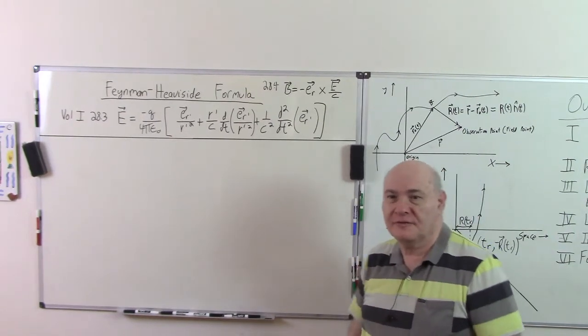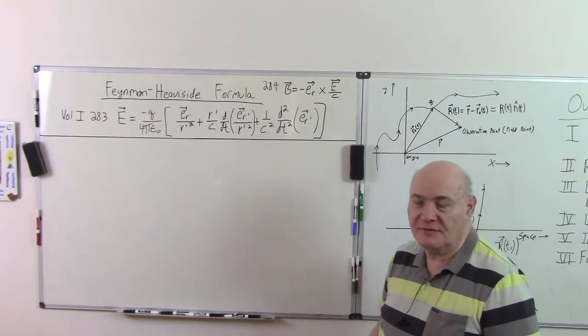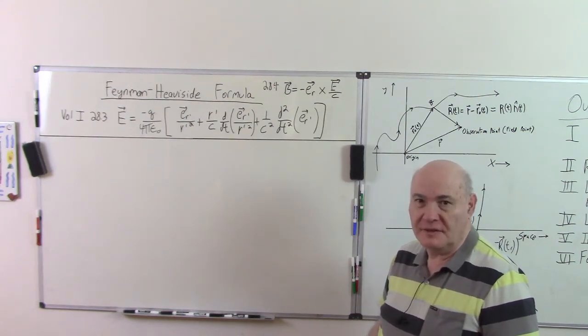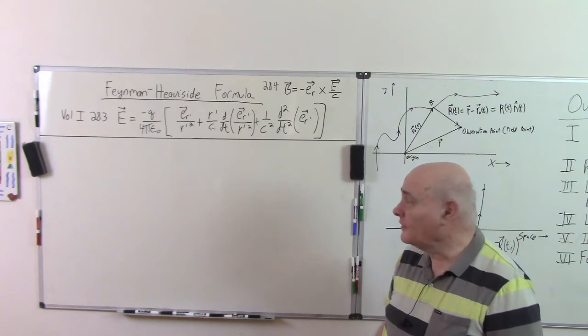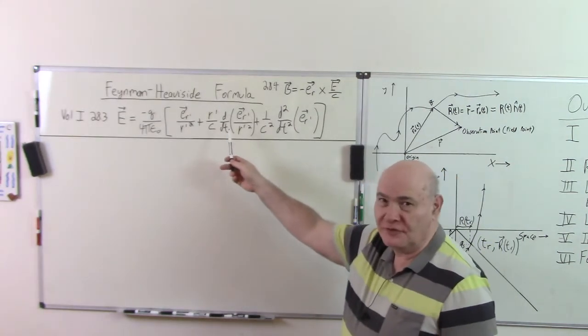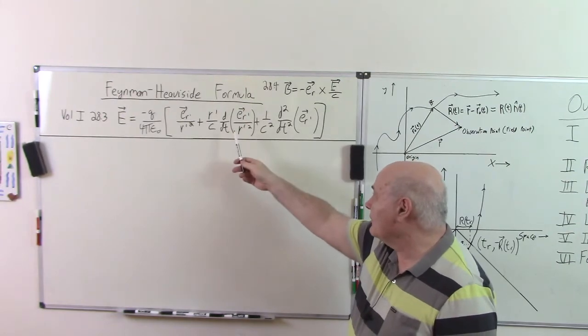Hi. Welcome back to this series of videos on the Feynman-Heaviside formula for the electric and magnetic fields from a general moving point charge. What I want to emphasize in this formula is that there are no approximations in this formula. This is relativistically valid.